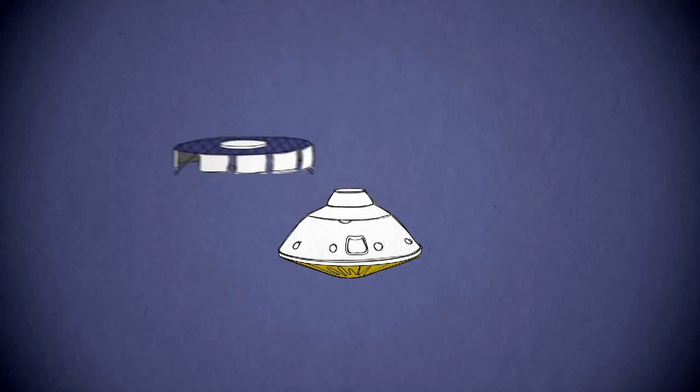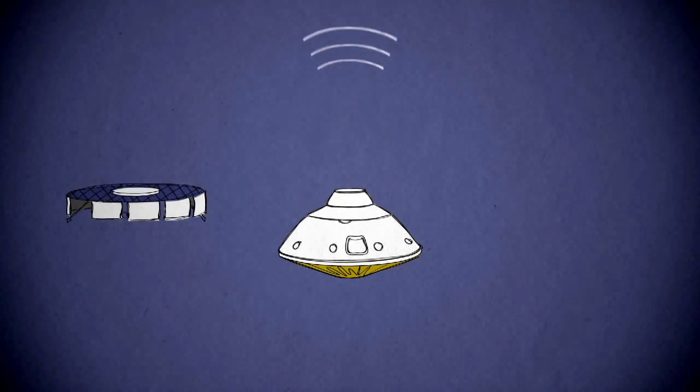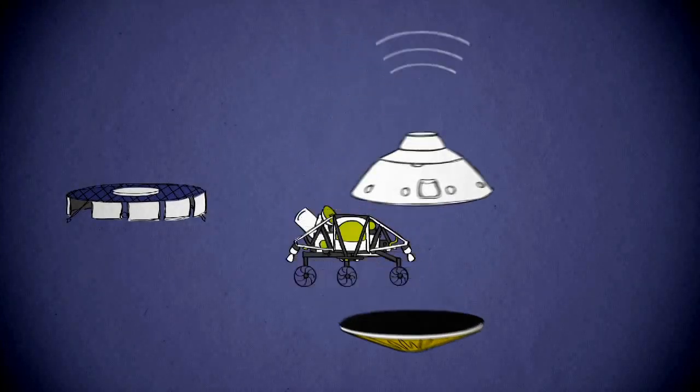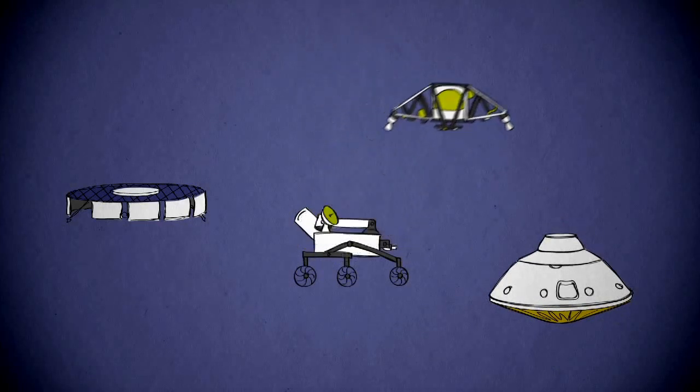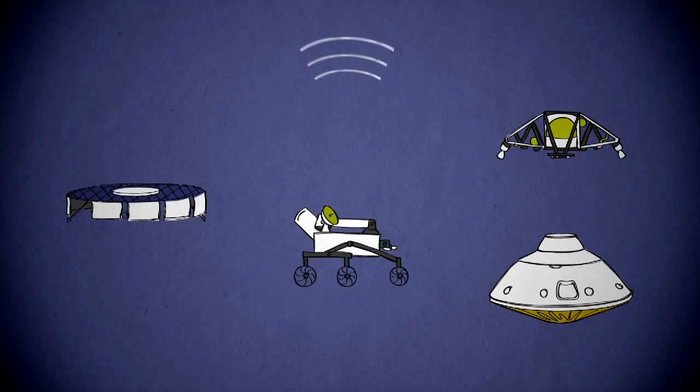During its descent through the atmosphere, Curiosity must switch to a new antenna for each transformation it makes. At each switch, we could lose lock on the signal for a short time. That won't hurt the rover, it just means we won't know what's happening right away.